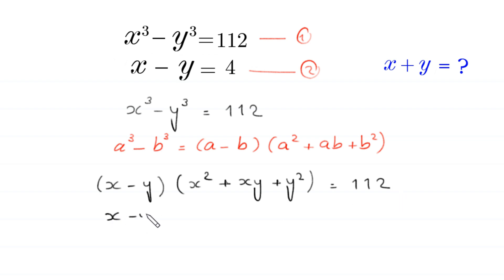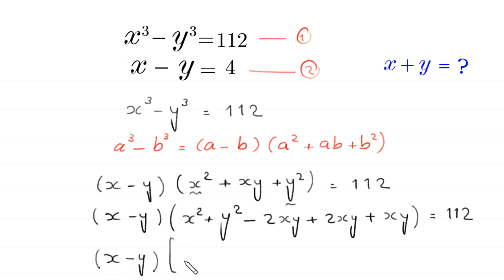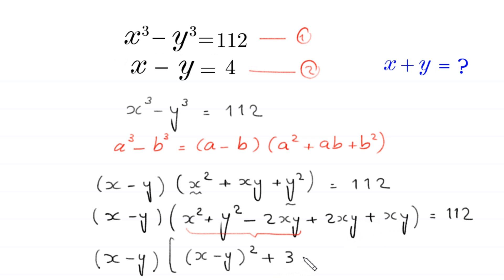Next, we rearrange the terms: x minus y times x squared plus y squared, and to make this a perfect square we subtract and add 2xy. So we subtract 2xy and add 2xy, plus the existing xy, giving x minus y times the quantity x minus y whole squared plus 3xy, equal to 112.